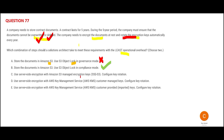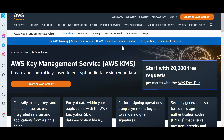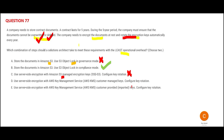Key rotation does not come with S3-managed encryption keys — that option is wrong. It comes with KMS only. KMS is the centralized service provided by AWS to control encryption keys and digital signatures. So do not create a custom solution. Both options D and E use KMS, but what is the difference between them?